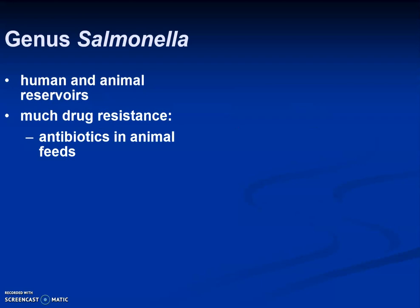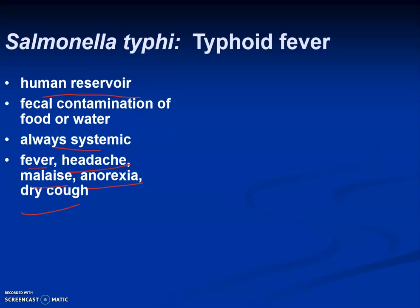The genus Salmonella has both human and animal reservoirs, and there is much antibiotic resistance, largely because of antibiotics used in animal feed. Salmonella Typhi causes typhoid fever. Its reservoir is humans, and infections occur through fecal contamination of food and water. The disease is always systemic.